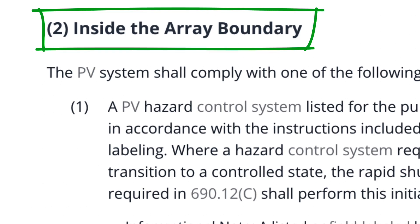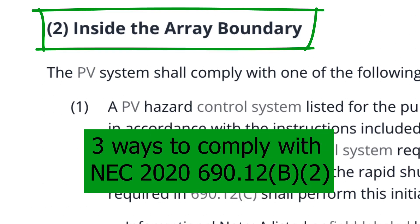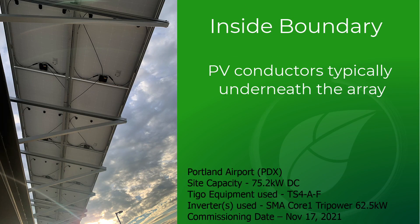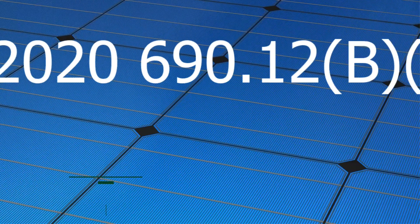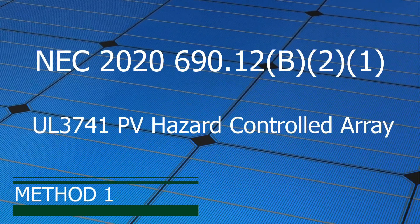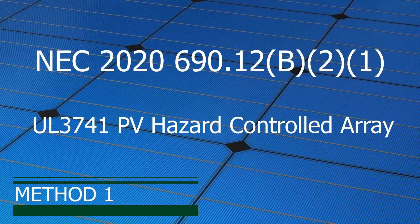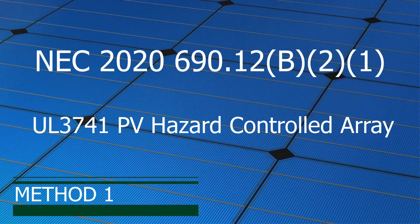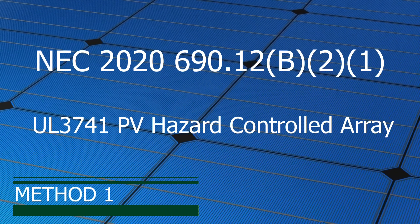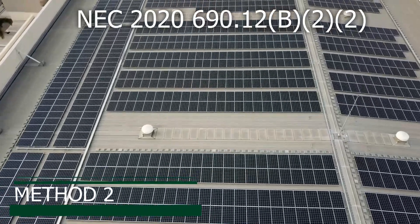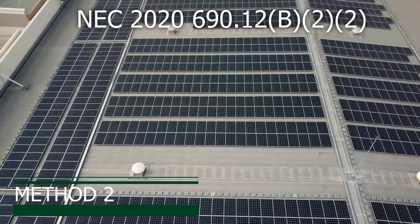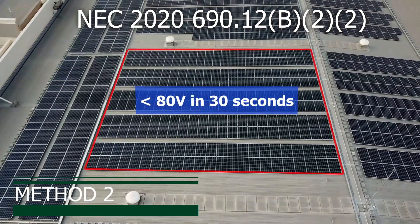690.12 B2 identifies the requirements for controlled conductors inside the array boundary. These are conductors that are typically hidden underneath the modules. Subsection 1 approves the use of a UL3741 PV hazard controlled array certification. Subsection 2 states the inside boundary voltage must be below 80 volts in 30 seconds once rapid shutdown has been initiated.